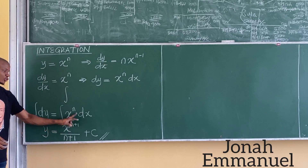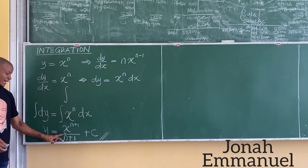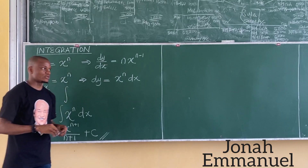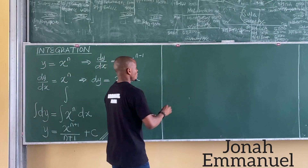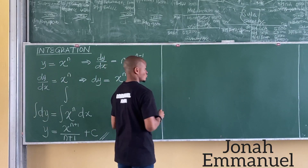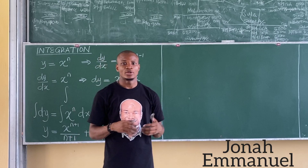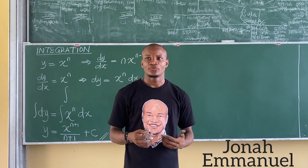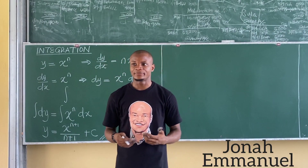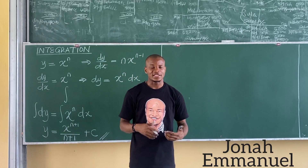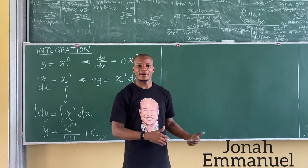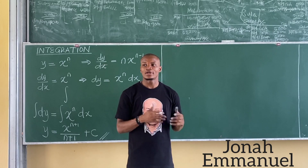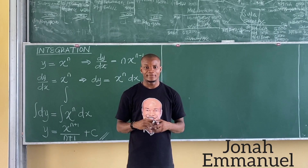It is as simple as adding 1 to the power and then dividing by what you have. We will take very simple examples and see how this works. When it comes to integration, there are different methods: there is the general method, there is by substitution, there is by parts, and so on. We will take the methods one after the other and work on them together.